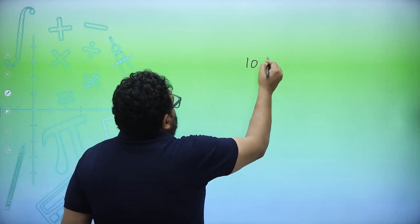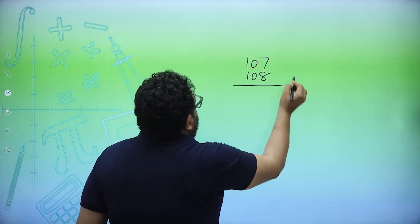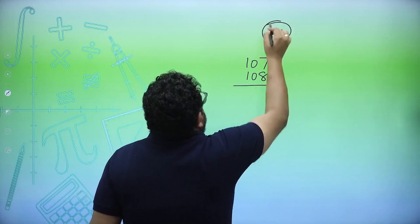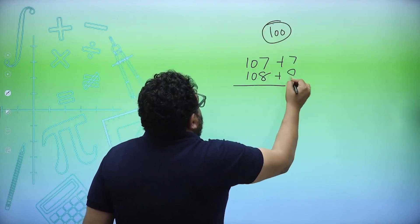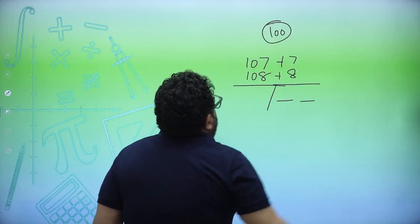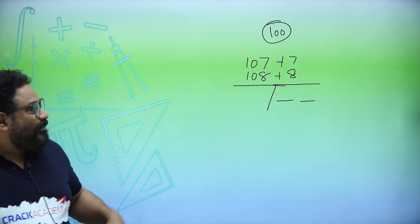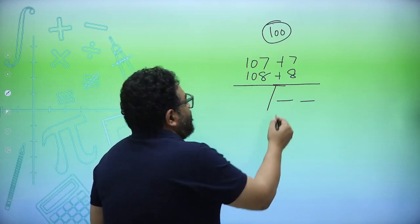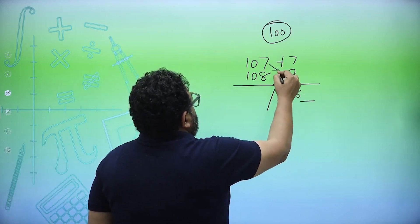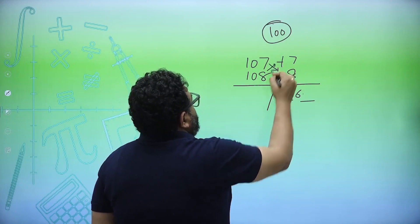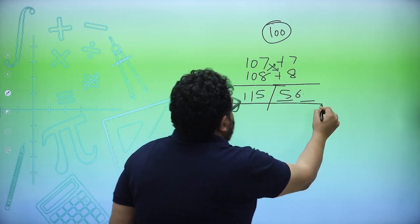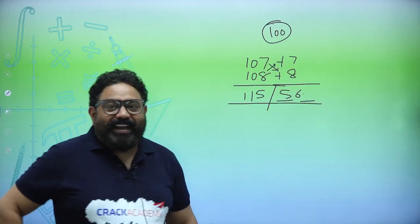Then you can think of more applications. The application does not stop. I may ask you what is 107 into 108. Again, base is 100, plus 7, plus 8. Make a very simple partition. Now what is 7 times 8? Multiply them, this is 56. Then what is 107 plus 8 or 108 plus 7? 115. 11556, easy as a piece of cake.